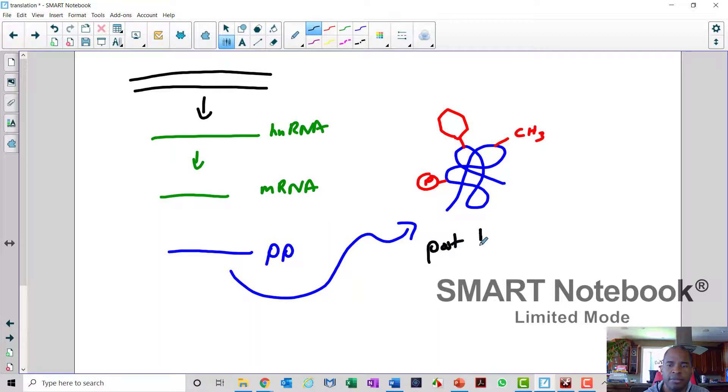So this final post-translational modification, let's see if I can write this out here, post-translational modification, this is the final step that is going to allow the protein to be created. Okay? And now that the final protein is created, it can leave the cell and do whatever it needs to do.